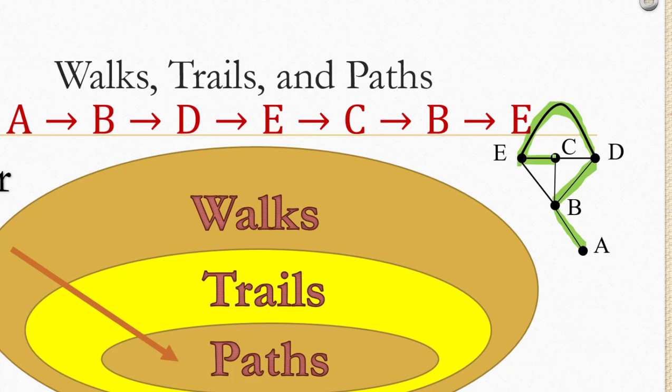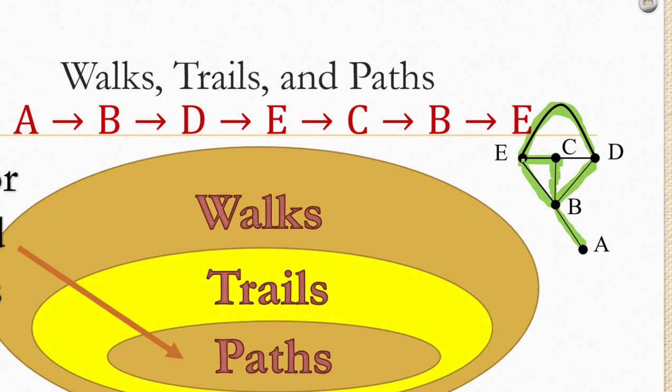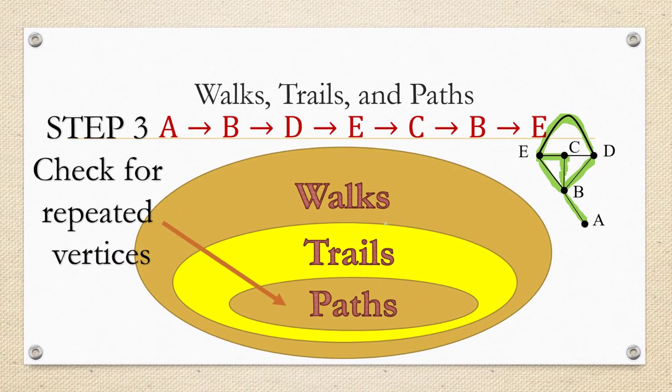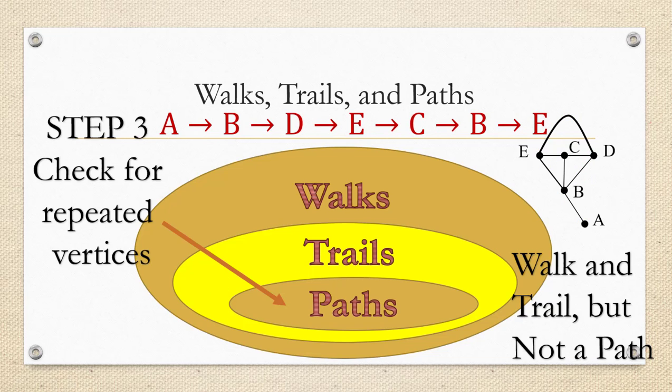Notice so far we haven't hit any edge twice, so this is why this is going to turn out to be a trail. From C we go to B, and then from B to E. So we didn't hit any edges twice, so we know that we have a trail. So now we look at the vertices, though, and we see that we have visited vertex B twice. That means that we cannot have a path. It's a walk and a trail, but not a path.